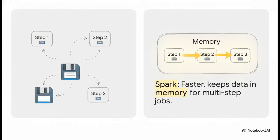So what made Spark so much faster? Well, the key difference, the secret sauce, is all about disk versus memory. See, MapReduce was super cautious. After every single step in a job, it would write the results down to the slow hard drive. Safe? Sure. But really, really slow.